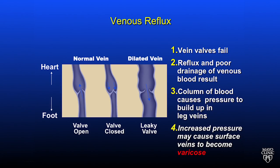The valves in the veins normally function to only allow blood to flow toward the heart and to stop blood from flowing toward the ankle. As the vein becomes dilated, the valve leaflets no longer function, and vein pressure builds toward the ankle.